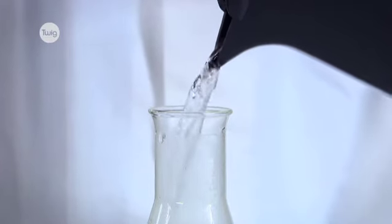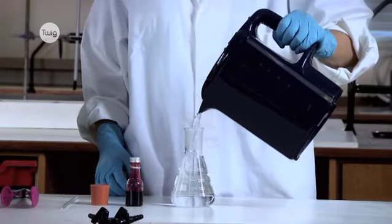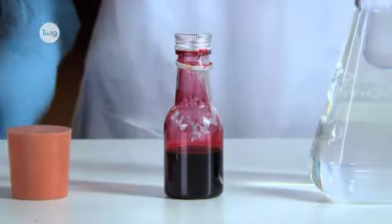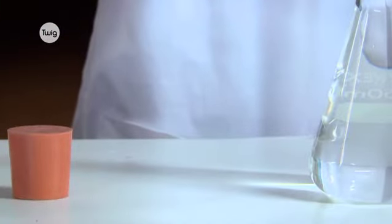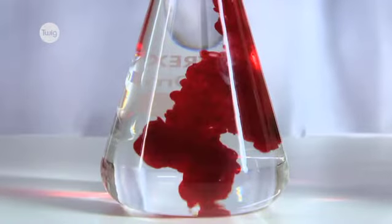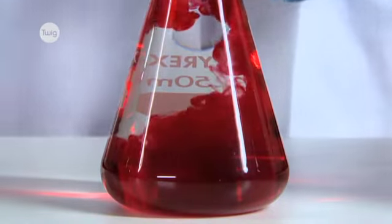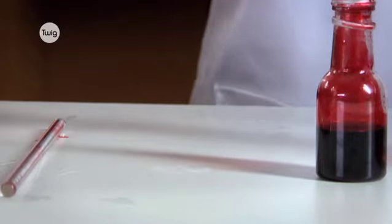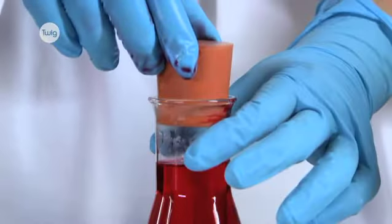We pour recently boiled water into a conical flask and add some food coloring. We then place a bung in the neck of the flask.